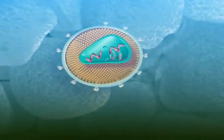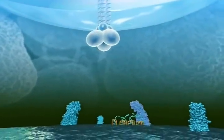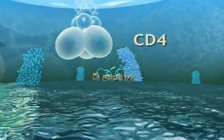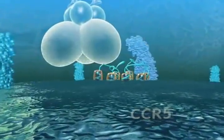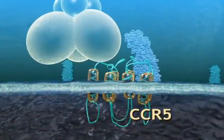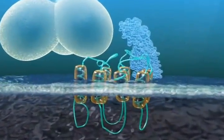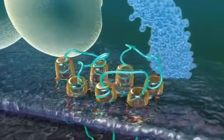For HIV infection to occur, the virus typically interacts with two receptors or doorways on the cell surface: CD4 and a co-receptor, CCR5. CCR5 is the primary co-receptor used by HIV for entry.